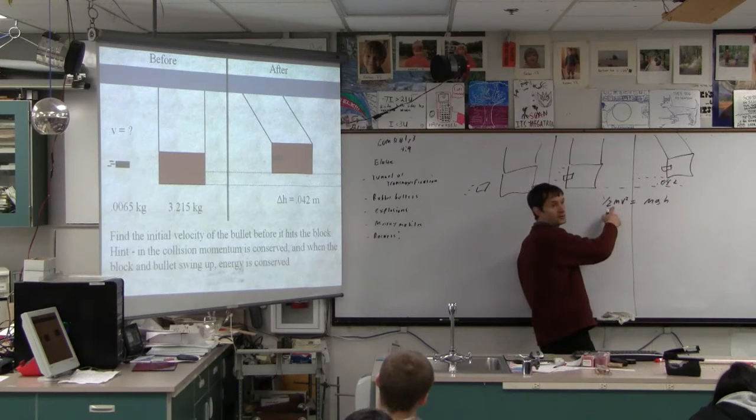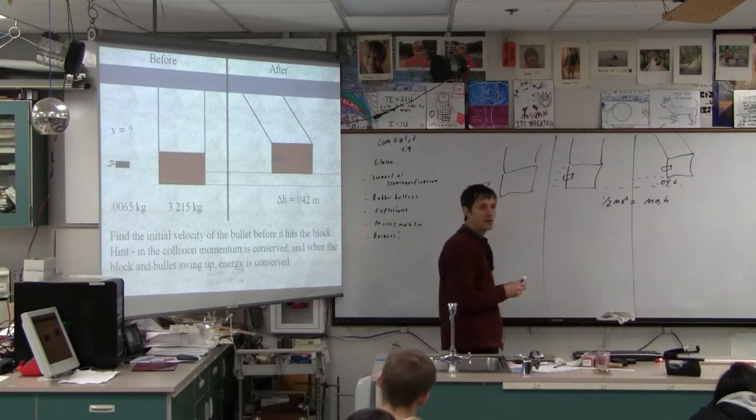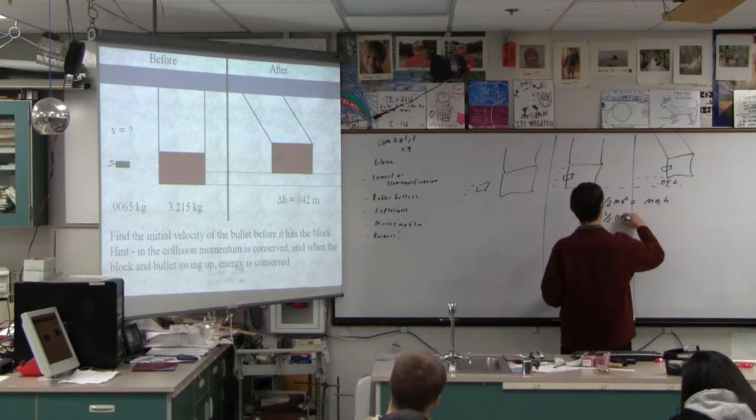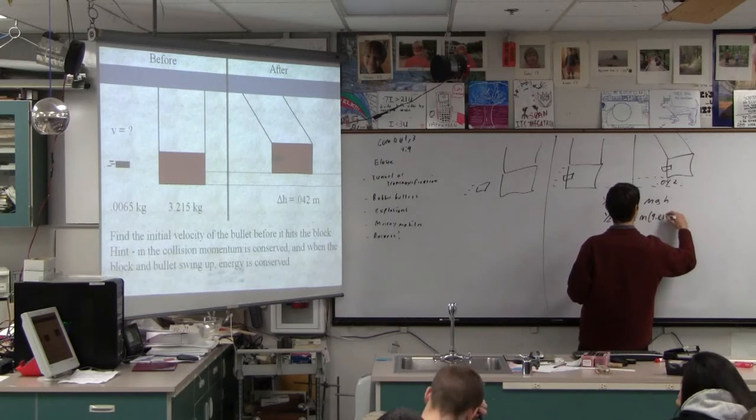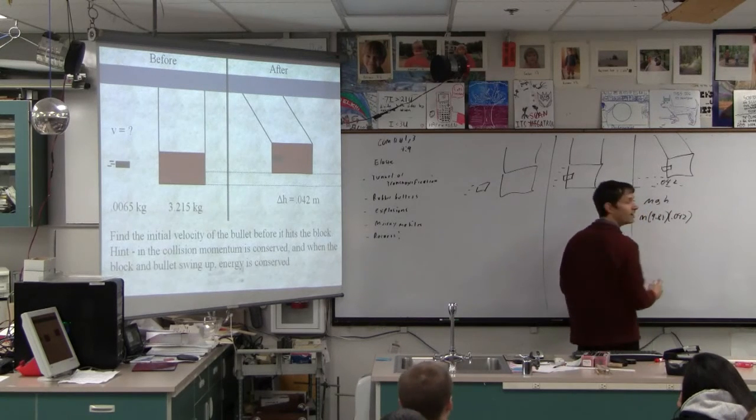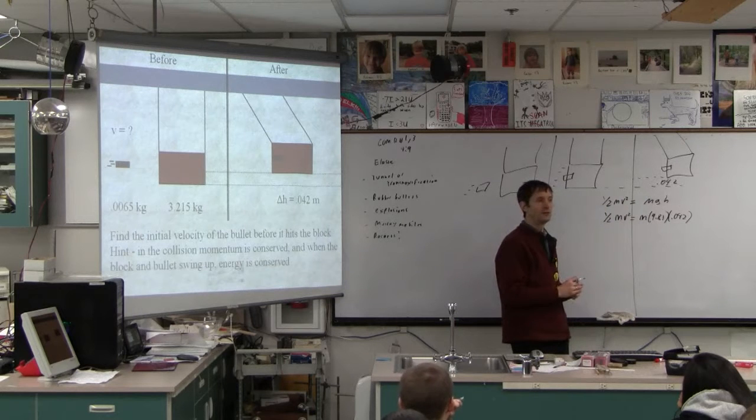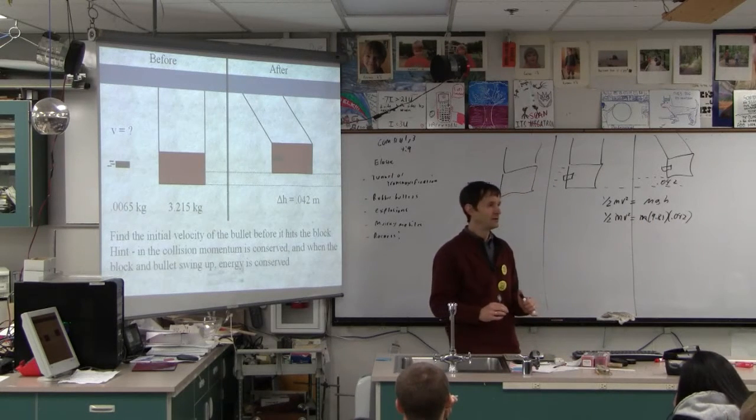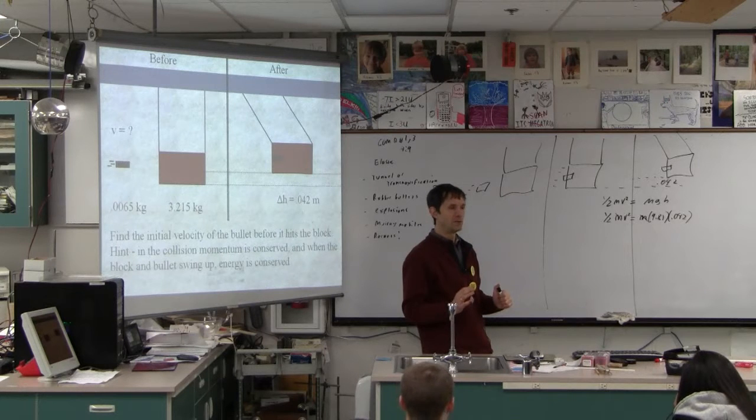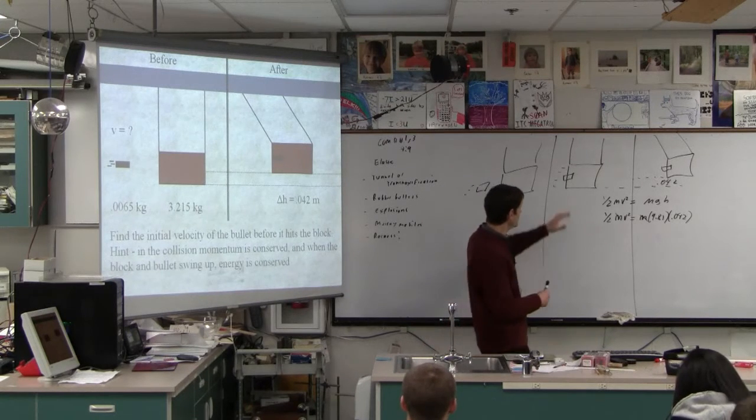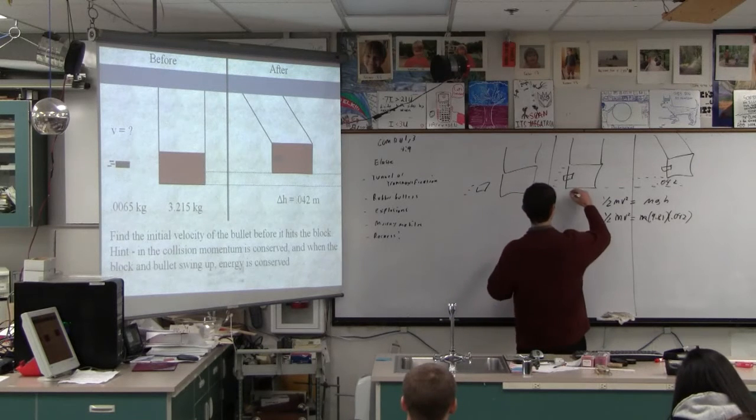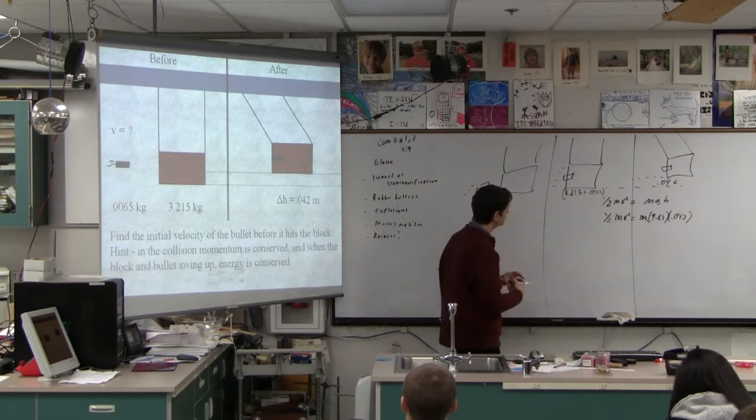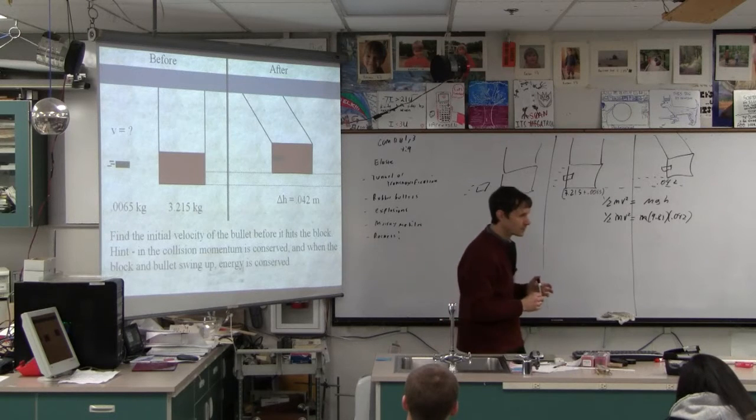So we use that knowing the height is 0.042, can't we figure out this velocity? Yeah, so do that. Take your calculator right now and solve for what that velocity is. It's going to look like this: one-half mv squared equals m times 9.81 times 0.042. Now do we need the mass to solve for this? Is it the same mass? So can't we just cross that off? We know the mass, so if that may doesn't work for you, if you're a conscientious objector and you have religious objections to crossing off the mass, then just put it in there because we know what it is. We know that this mass is 3.215 plus 0.0065.